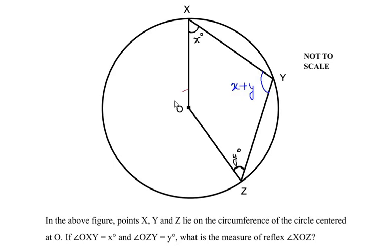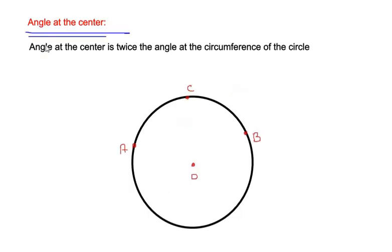Now to find the reflex angle XOZ we are going to use a circle theorem called the angle at the center theorem. It states that the angle at the center is twice the angle at the circumference of the circle.